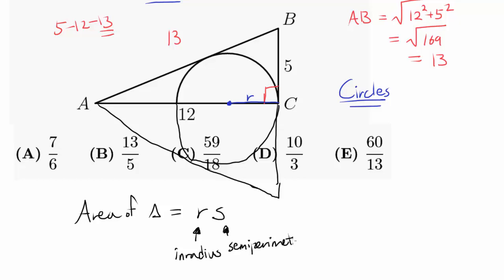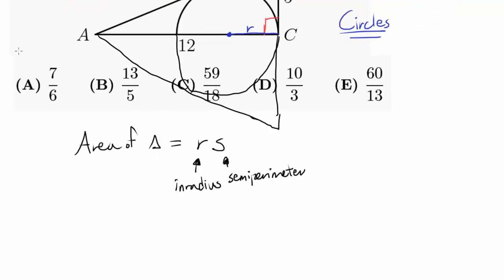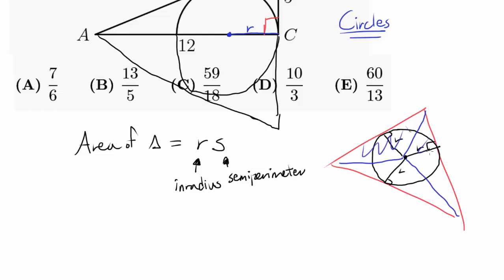Let me prove this quickly before we go on. Let's say we have a triangle - it doesn't have to be right - with a circle inscribed within. We have an incircle with inradius R. We can make three triangles by drawing from the center to each vertex - that's one triangle, the second one, and the third.